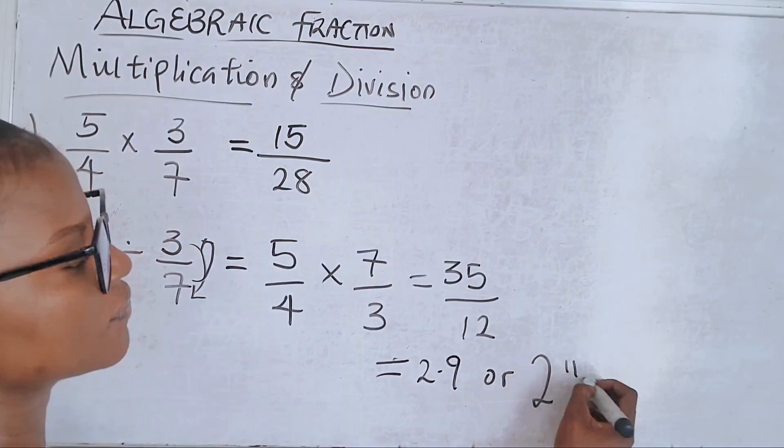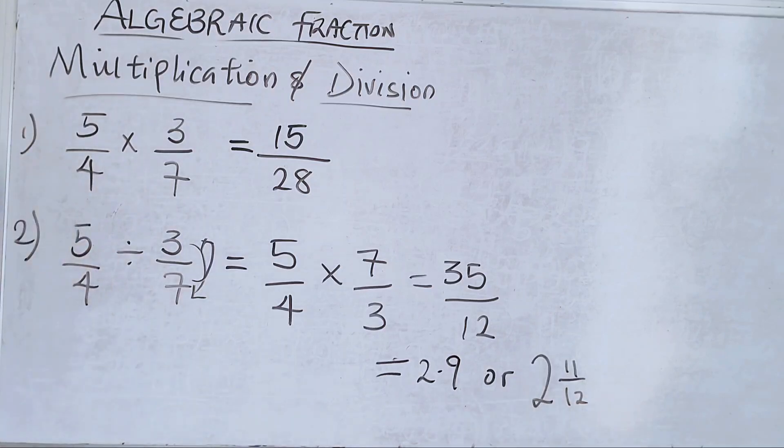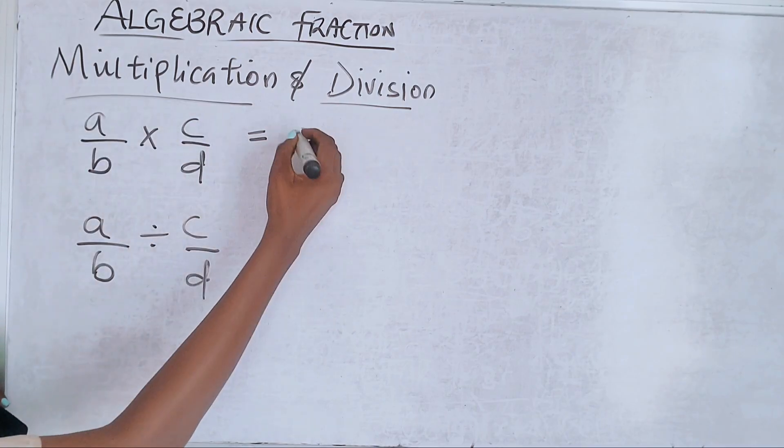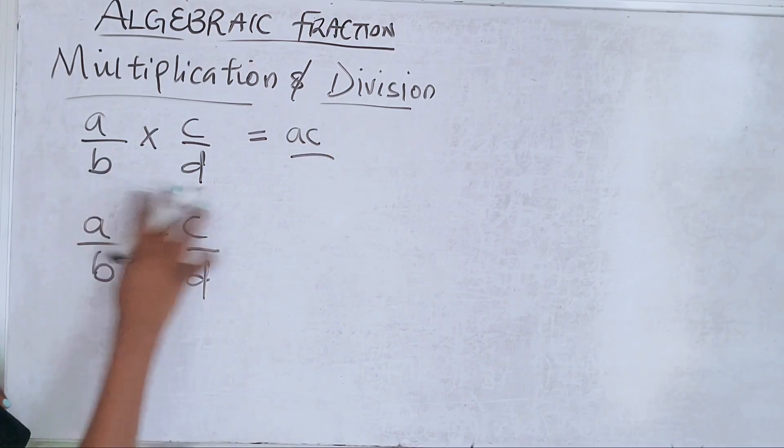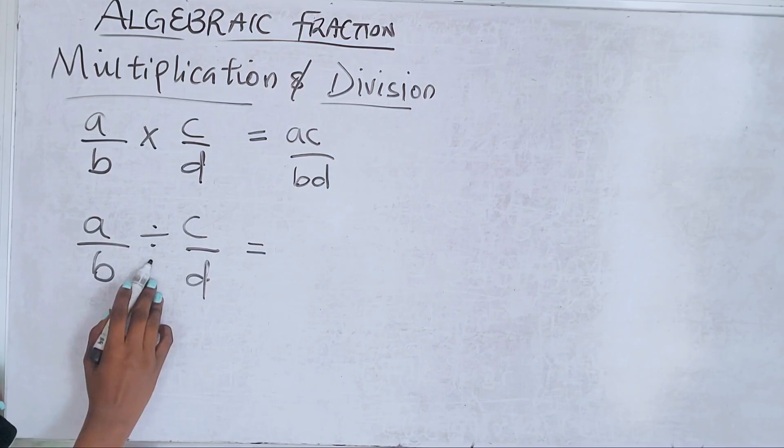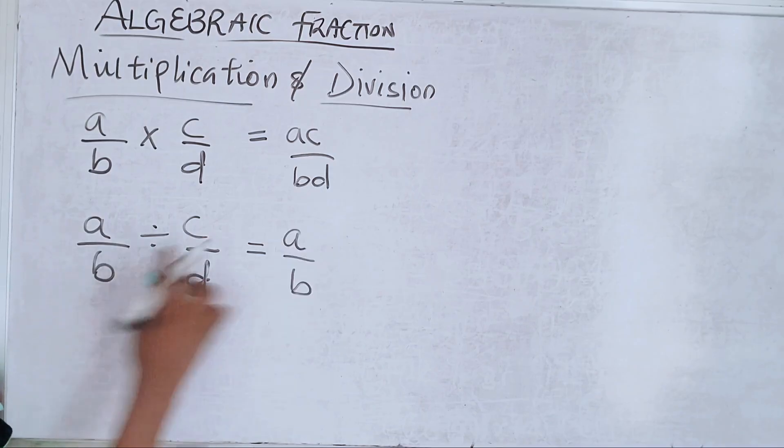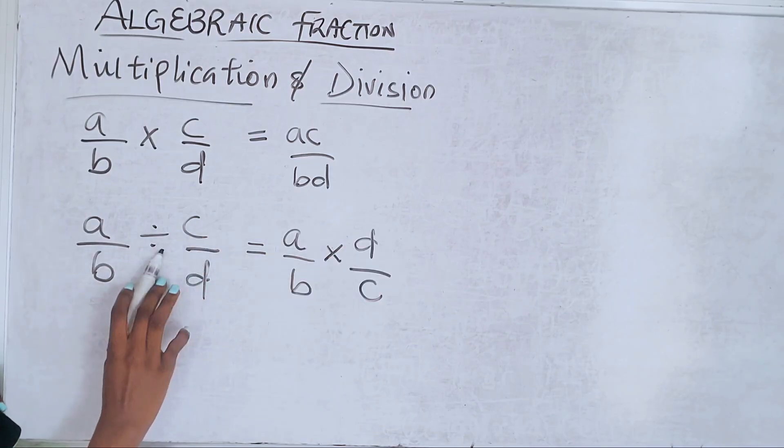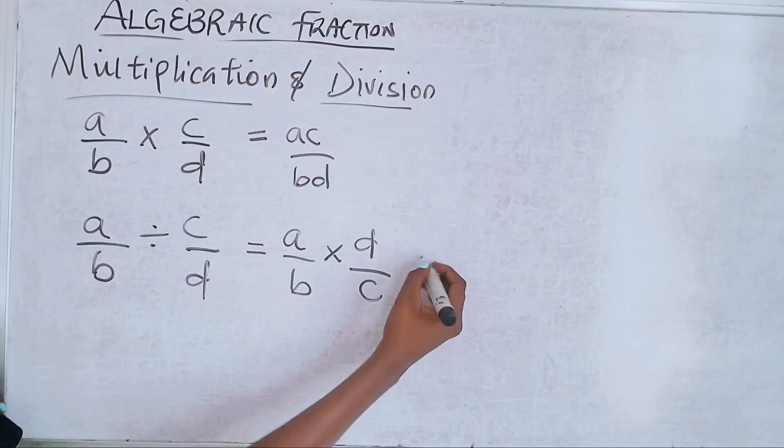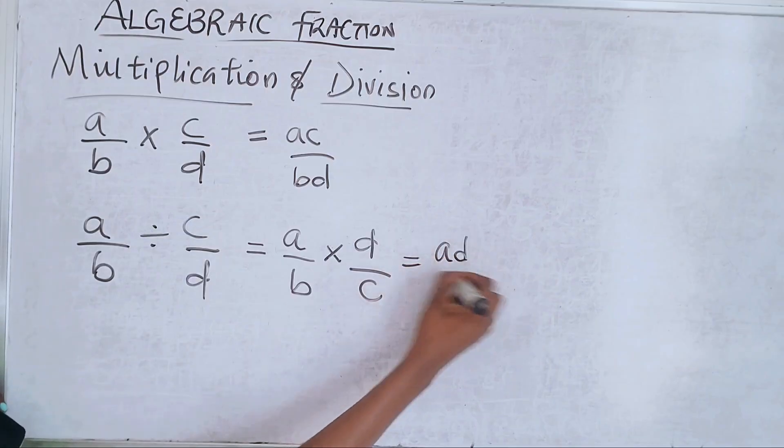Let's solve more examples. You know that a/b times c/d is ac/bd - multiply your numerator and then multiply your denominator. In the case of division, change the division sign, reverse it, and then this gives us ad over bc. That makes it different.